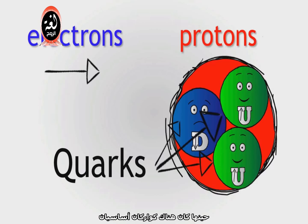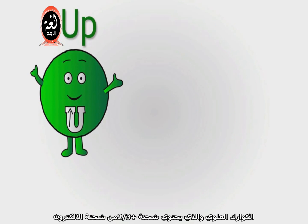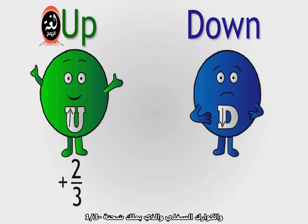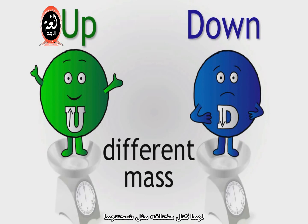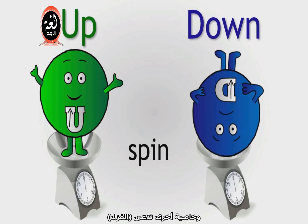At the time, there were two basic Quarks: the Up Quark, which has a charge of plus two-thirds of the charge of an electron, and the Down Quark, which has a charge of minus one-third. They differ in mass, charge, and another property called spin.